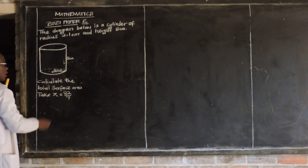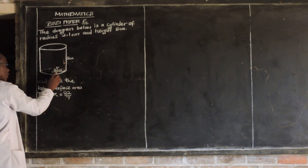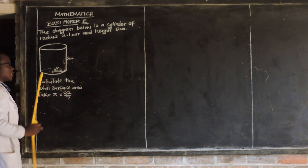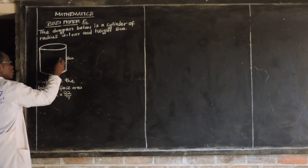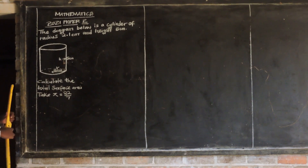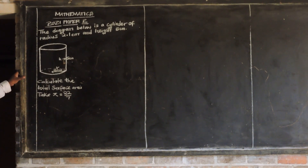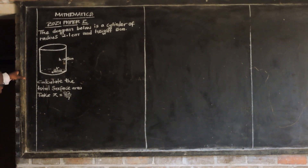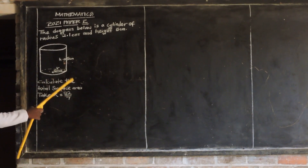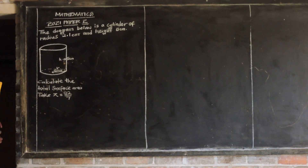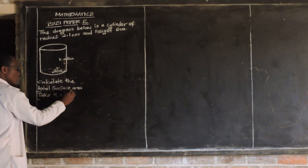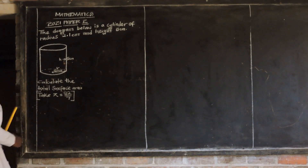This is our radius sign. Our radius has been given as 2.1 centimeters, and height 5 centimeters. This is our edge — 5 centimeters — and this is our radius, 2.1 centimeters. The question is saying: calculate the total surface area of this cylinder, taking pi as 22 over 7. They want us to use pi as 22 over 7 to calculate the total surface area of this cylinder, whose radius is 2.1 centimeters and height 5 centimeters.